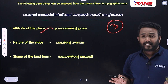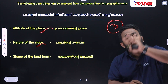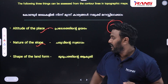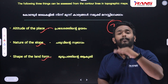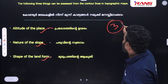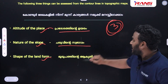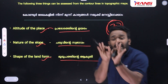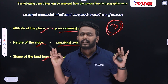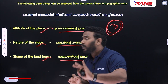The three things that can be accessed from a contour line are: the altitude of the place, the nature of the slope, and the shape of the landform.